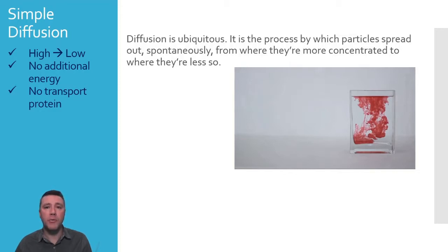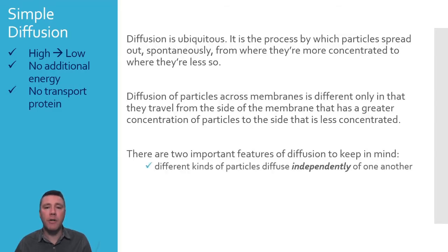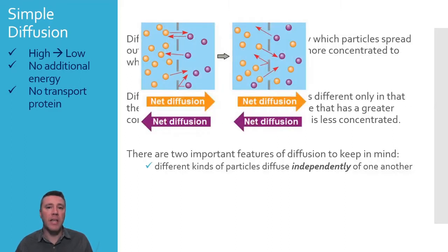Diffusion into or out of a cell is only different from those examples in that particles travel across a membrane. They travel from the side of the membrane where the particles are in a high concentration to the side of the membrane where there is a lower concentration. There are two important features of simple diffusion that must be kept in mind. The first is that different kinds of particles diffuse independently of one another.